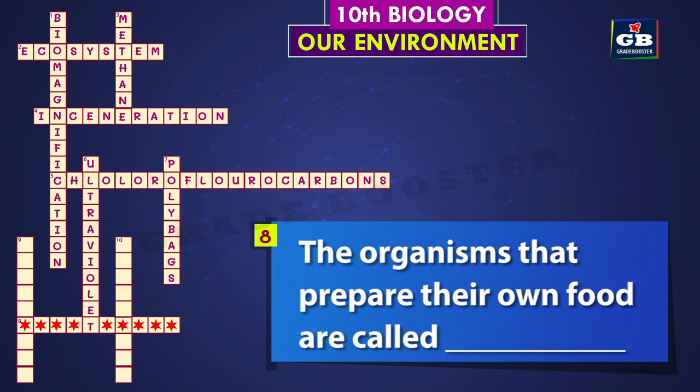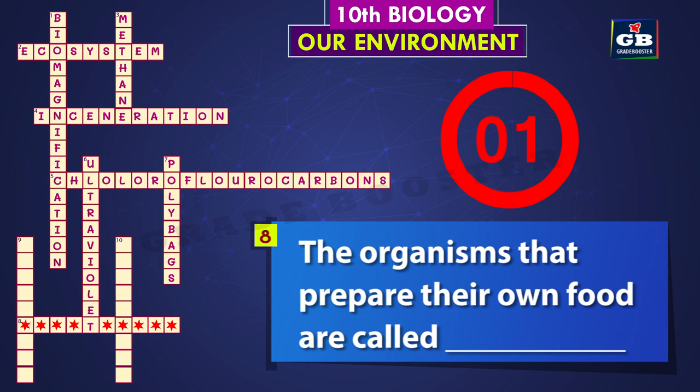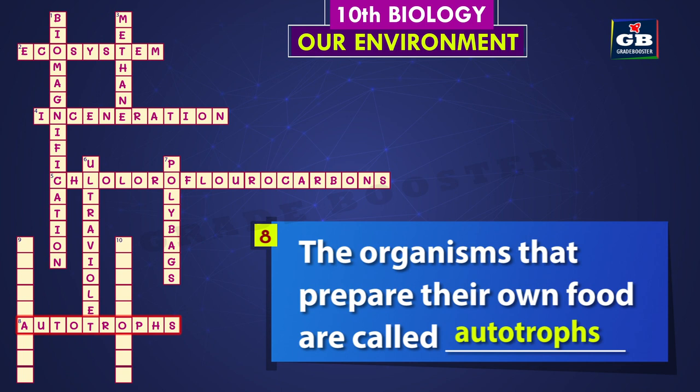Eight across: the organisms that prepare their own food are called dash. The answer is autotrophs. The organisms that prepare their own food are called autotrophs.